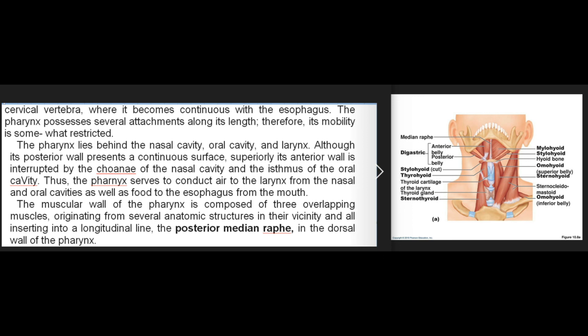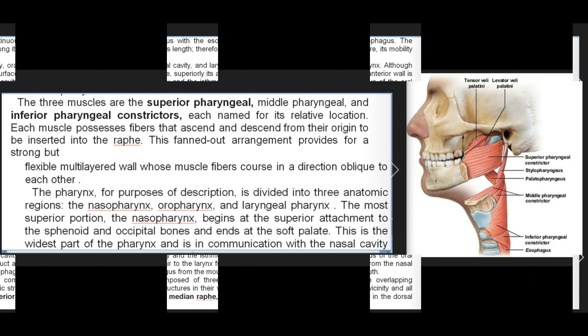The pharynx extends in an inferior direction from the base of the cranium to the level of the sixth cervical vertebra, where it becomes continuous with the esophagus. The pharynx lies behind the nasal cavity, oral cavity, and larynx. Although its posterior wall presents a continuous surface superiorly, its anterior wall is interrupted by the choana of the nasal cavity and the isthmus of the oral cavity. Thus the pharynx serves to conduct air to the larynx from the nasal and oral cavities as well as food to the esophagus from the mouth.